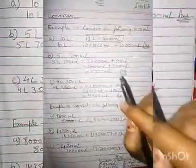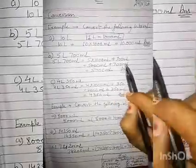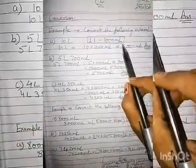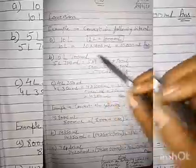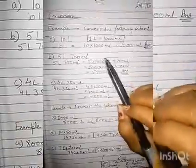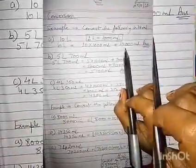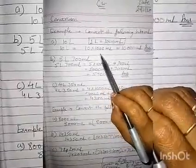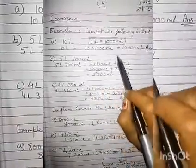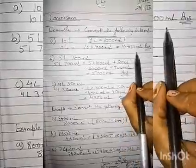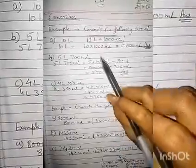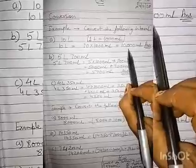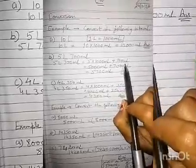you know the rule: 1 litre equals 1000 milliliter. So 10 litre ko aapko convert karna hai. So 1 litre me 1000 milliliter hai. So 10 litre me 10 multiply 1000 milliliter, answer 10,000 milliliter.